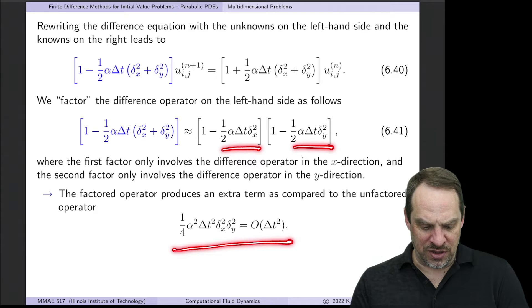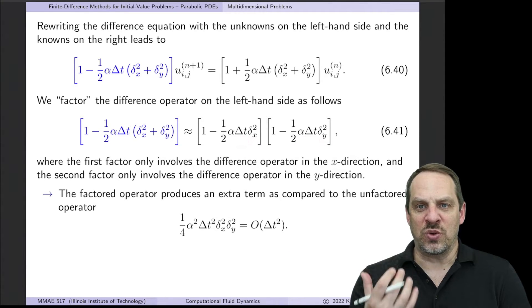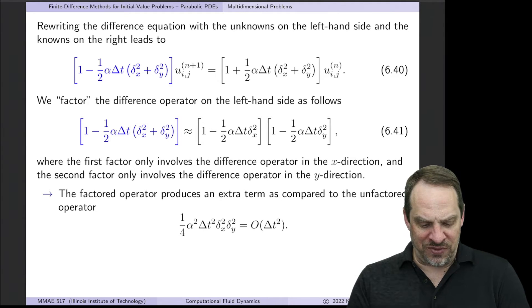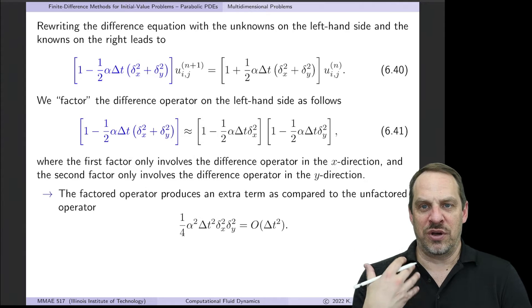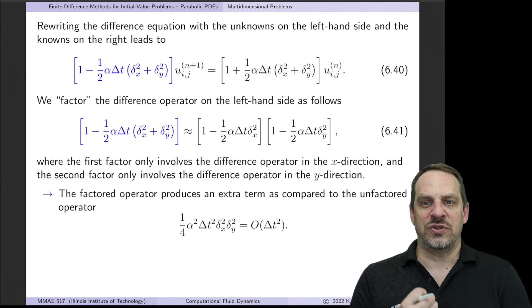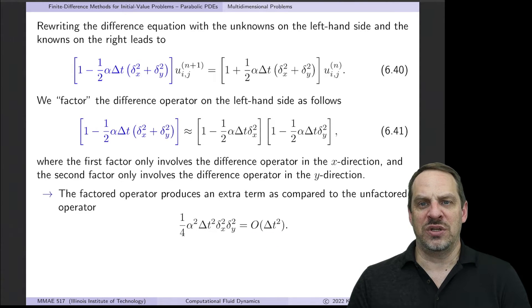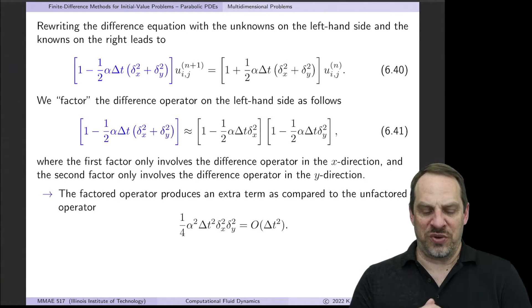Now you'll notice there's one additional term that we now have in the factored form that was not present in the original form, and that's when I multiplied this times this. I've repeated it down here to emphasize the fact that you'll notice it's a delta t times a delta t. So it's order delta t squared. The term that's now being included by factoring it in this way that was not in the original difference operator is only order delta t squared. That's the same accuracy of the underlying Crank Nicholson method. So even though we're introducing this additional error, because this term is not included in the approximation, that error is of the same order as the errors that are already present within the system.